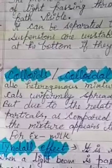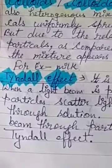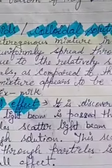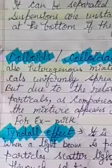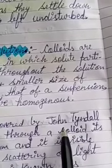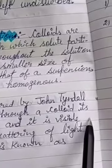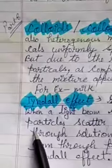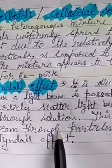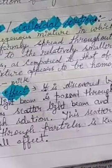There is a term called the Tyndall effect. Let's discuss it. What is the Tyndall effect? After that, we will read about the properties of colloids. The Tyndall effect was discovered by John Tyndall — named after the scientist. When a light beam is passed through a colloid, its particles scatter the light beam, and it is visible through the solution. This scattering of a light beam by the particles is known as the Tyndall effect.